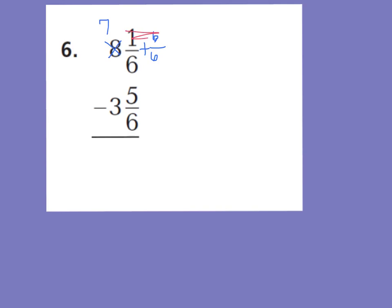I'm going to cross that out and call this 7 sixths. Now it still has the same value as my original 8 and 1 sixth — I just renamed this as 7 wholes and 7 sixths. This way I can subtract, and it still equals 8 and 1 sixth. Now I have 7 sixths minus 5 sixths is 2 sixths, and my whole number is 7 minus 3 is 4. So the answer is 4 and 2 sixths, also known as 4 and 1 third, because you can simplify by dividing by 2.